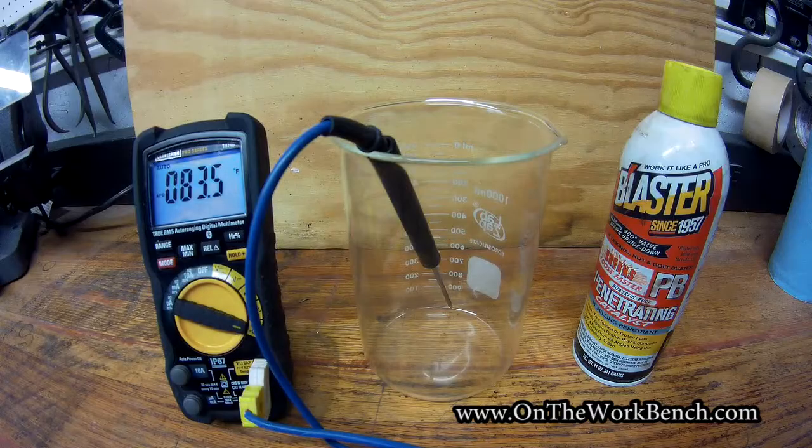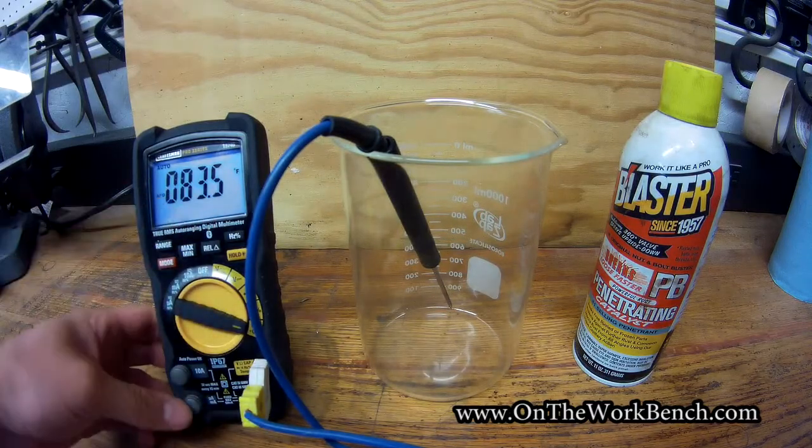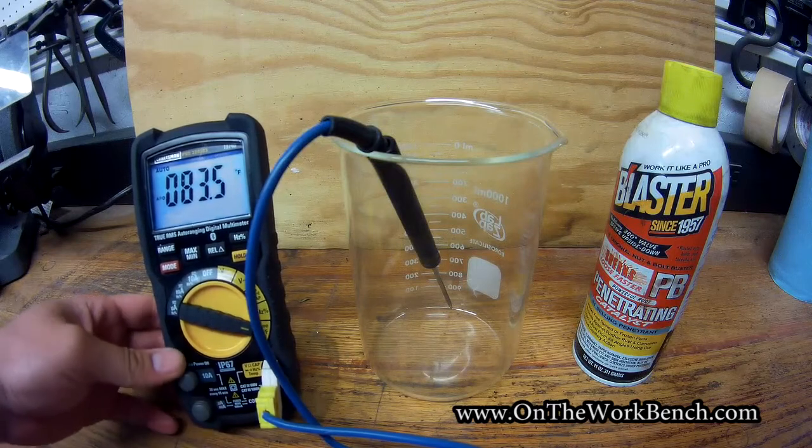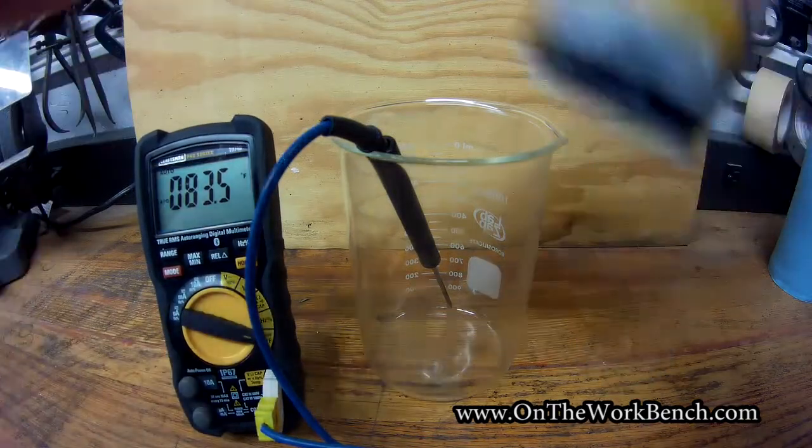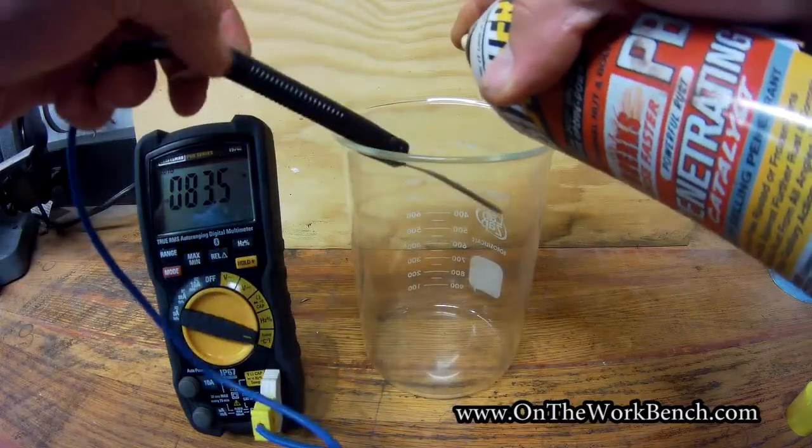So right now, after clean up here, we're up to about 83.5 degrees Fahrenheit here on the meter, hopefully you can see that in frame. And now we're going to use the PB Blaster and I'm going to spray this onto our needle here.